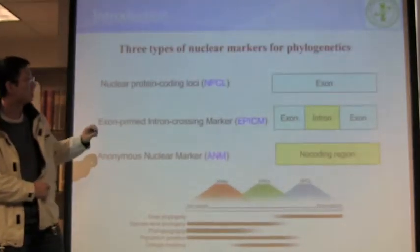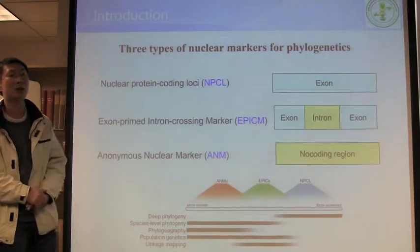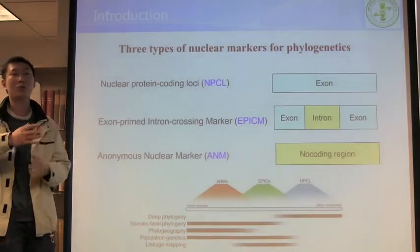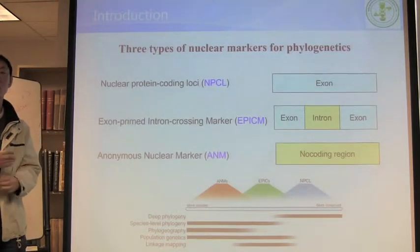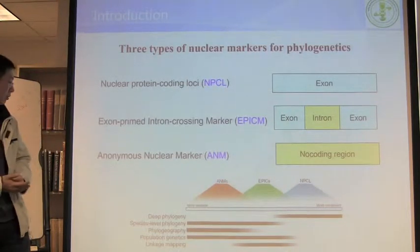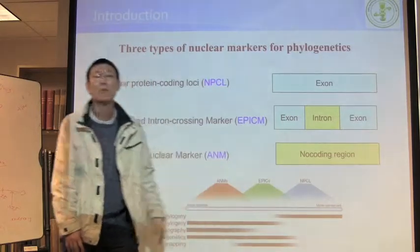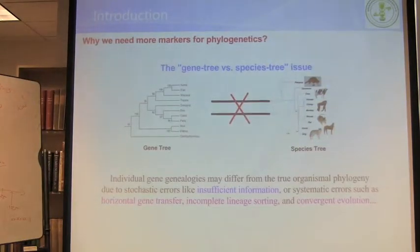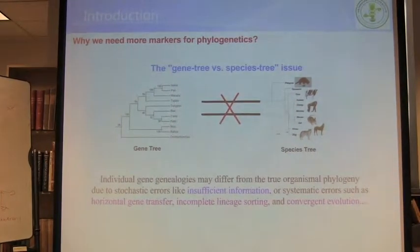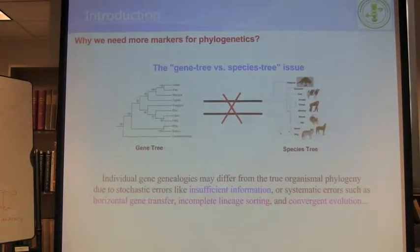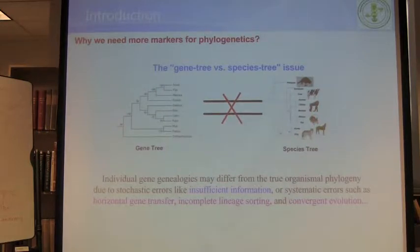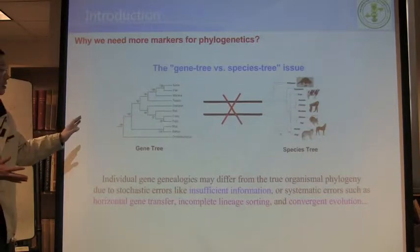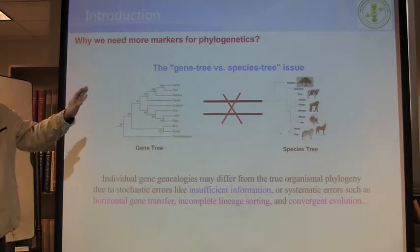Our interest now is focusing on the NPCR markers, because I like to resolve some deep phylogeny questions. So today I'm going to talk about the NPCR markers. Why do we need more markers for phylogenetics? The question is very simple: it's because of the gene tree and species tree issue — gene trees sometimes don't equal the species trees.